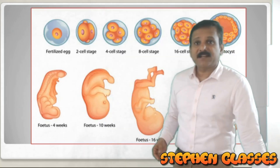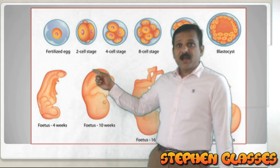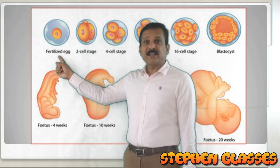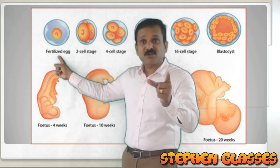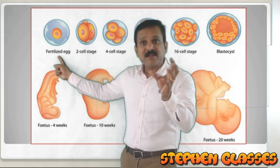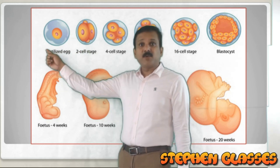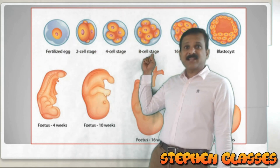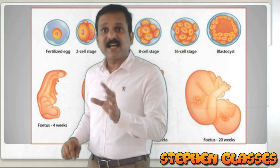This next slide will give you an idea about development. The zygote is a fertilized egg. It will undergo repeated mitotic divisions — what is the term for that? Cleavage. By cleavage, the zygote develops into a two-cell stage, then four-cell stage, then eight or sixteen-cell stage. The eight or sixteen-cell stage can be termed the morula.